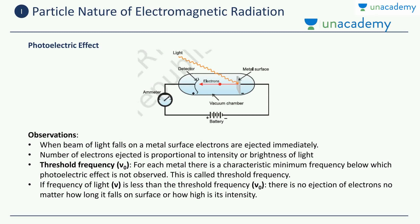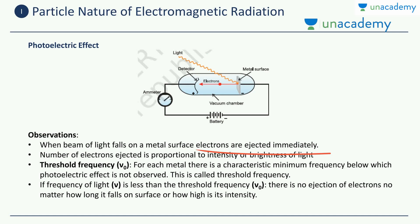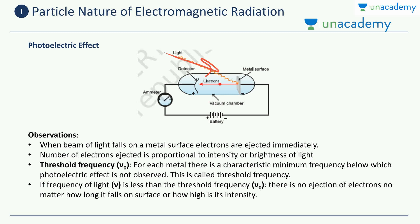Now let us look at some observations from the photoelectric effect. First, when a beam of light falls on a metal surface, electrons are ejected immediately — if the light has enough energy, the electron is ejected instantaneously with no lag. Second, the number of electrons ejected is proportional to the intensity or brightness of the light. If you increase the brightness, the number of electrons keeps increasing. So intensity is proportional to the number of electrons — this is an important statement.